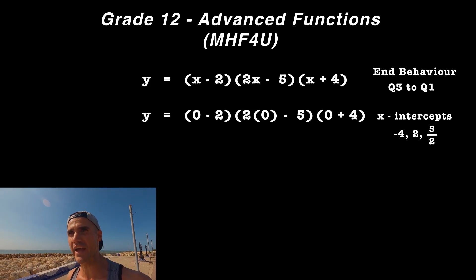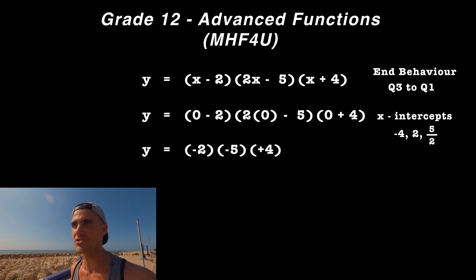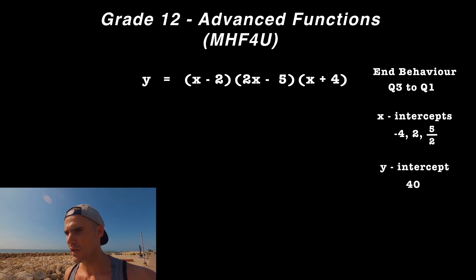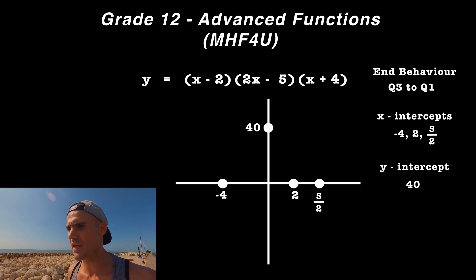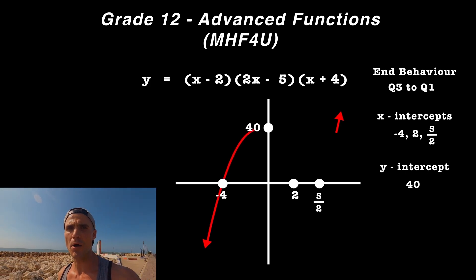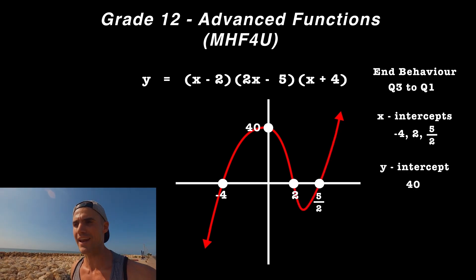If you plug in 0 for all x-values, which is how you find a y-intercept, you get 40 for this polynomial. Plotting all the intercepts and starting at the correct end behavior, you end up with your polynomial once you connect everything.